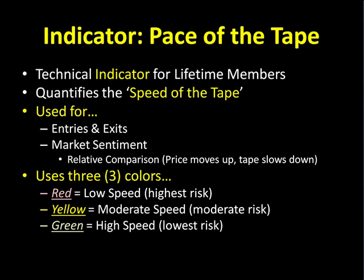If we see the pace of the tape indicator speed up, giving us yellow and green POT bars, that tells us the time and sales window is moving much faster. With price action speeding up, if we then see the market move down, that tells me the sentiment is to the downside. So if we see price action speed up on our pace of the tape indicator — it's a speedometer of the time and sales window — and I see prices rising, then I know the sentiment is long. On the opposite side, if my pace of the tape indicator is showing nothing but red bars, that means very slow speed of the tape. If I have price rising, that usually means sentiment is in the opposite direction. So if the price slows way down while it still rises, that means the sentiment is most likely to the downside.